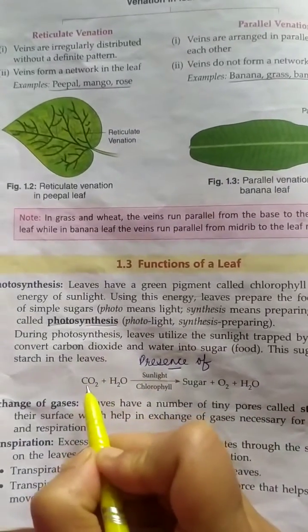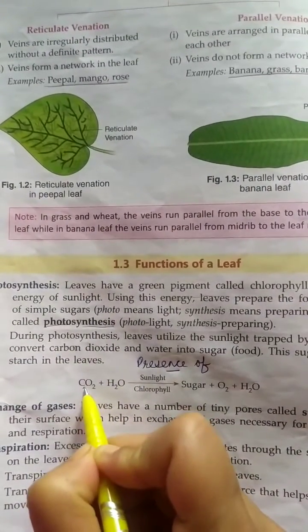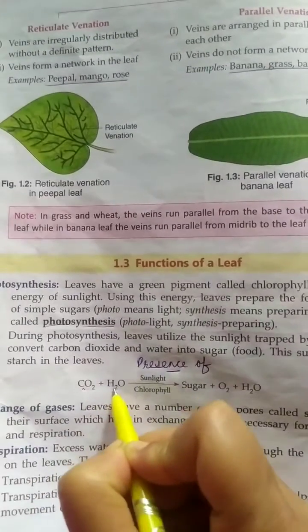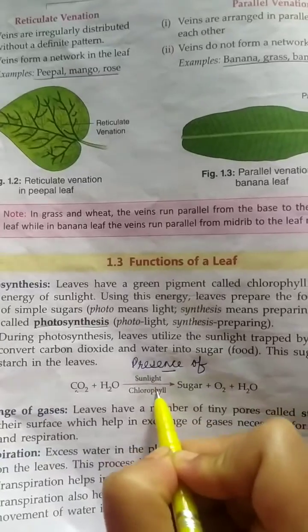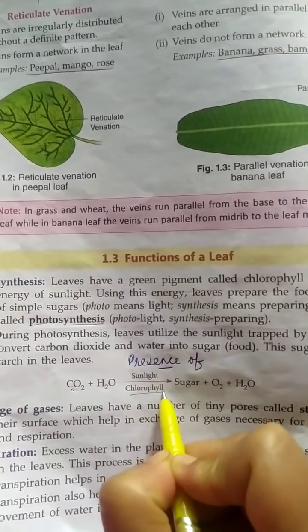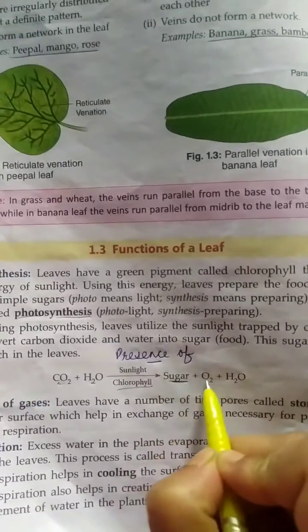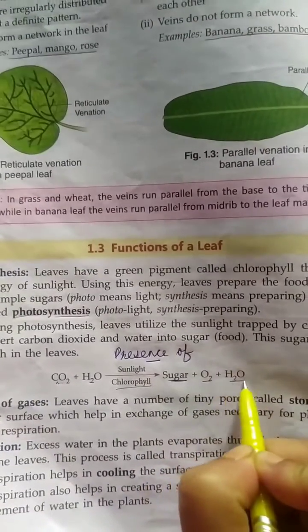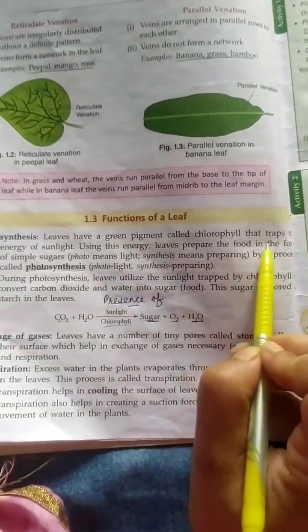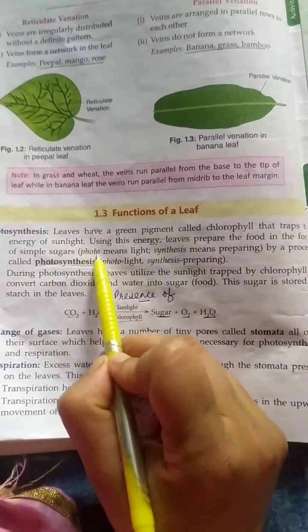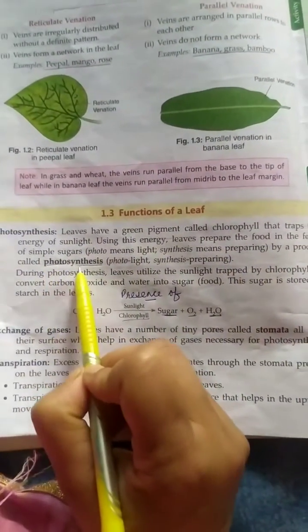Plants take carbon dioxide along with water in the presence of sunlight and chlorophyll — a green pigment present in the leaves — to make sugar, which is the food, along with oxygen and water. Leaves have a green pigment called chlorophyll that traps the energy of sunlight. Using this energy, the leaf prepares food in the form of simple sugar by the process of photosynthesis.